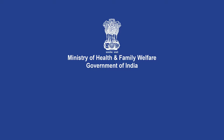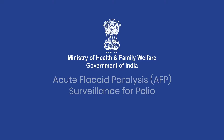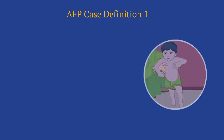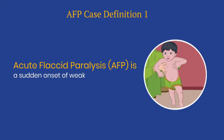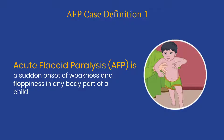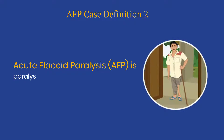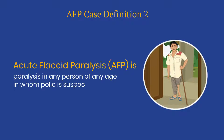In this video, we will learn about the acute flaccid paralysis surveillance for polio. Acute flaccid paralysis is a sudden onset of weakness and floppiness in any body part of a child less than 15 years of age, or paralysis in any person of any age in whom polio is suspected.